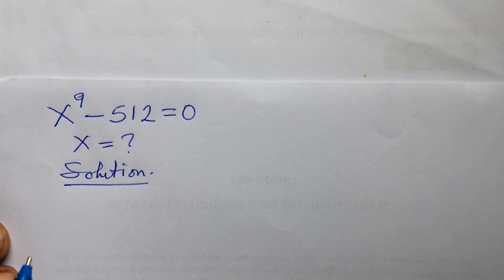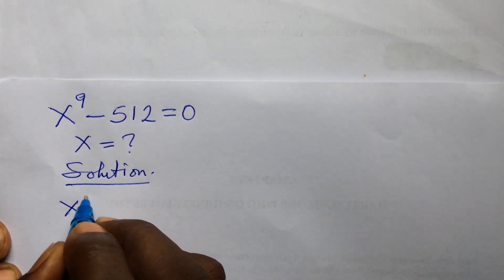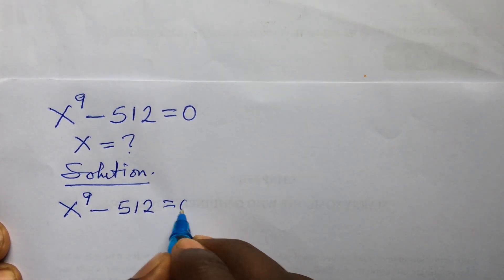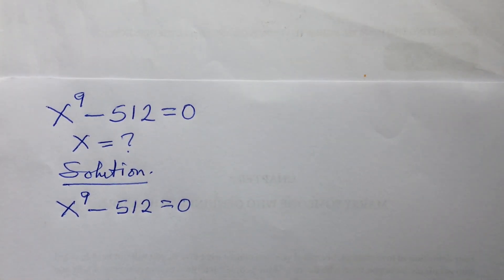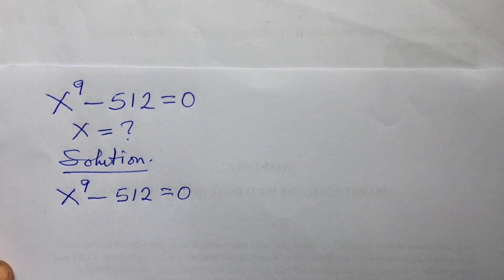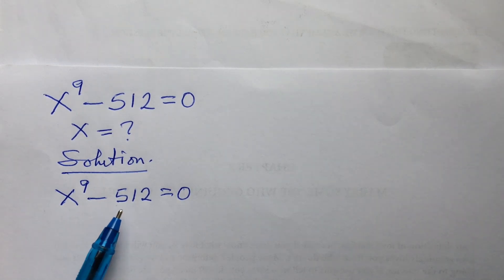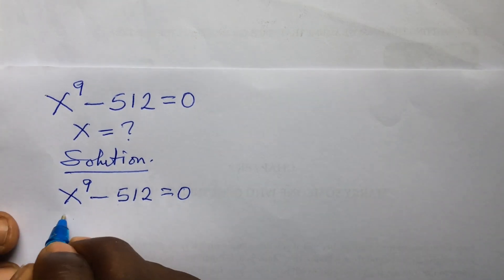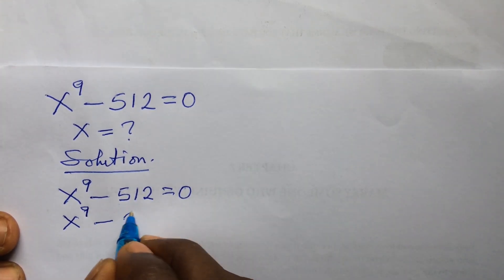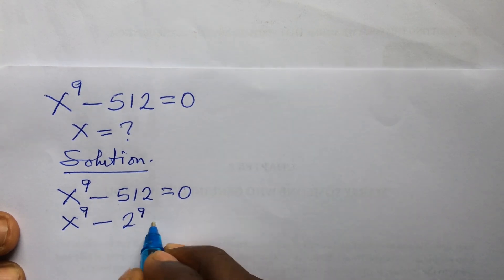We put down our question: x to the power of nine minus 512 equal to zero. We look at the number 512 and think of a way of reducing it to the smallest number raised to a particular power. We can write 512 as 2 to the power of 9, so we express this as x to the power of 9 minus 2 to the power of 9 equal to zero.